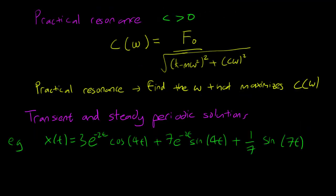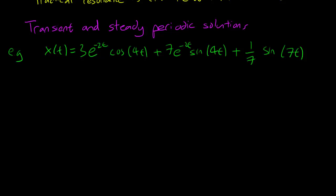Finally, the last topic we have to talk about are the transient and steady periodic solutions. This is, in actuality, pretty easy. So once you've solved for the solution, for the movement of the spring of a mass spring system that's forced, it typically looks like this. You have all these trig functions, and some of them have exponentials and some don't.